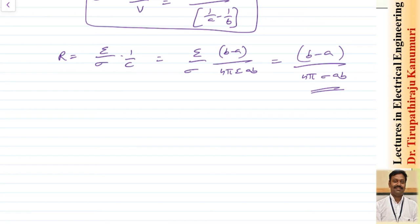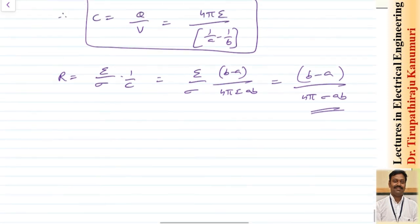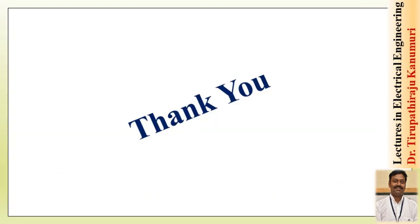I hope everything we calculated up to here is clear. In the next class we are going to derive the capacitance of a two-wire transmission line and how the capacitance is formed. After that we will proceed to the remaining theorems. If you have any queries related to these topics or different types of capacitor configurations, please leave your comments in the comment section below and I will answer them. Thank you very much.